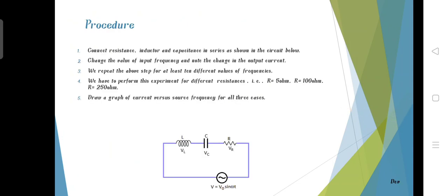The procedure of this experiment includes: Connect resistance, inductance and capacitances in series as shown in the circuit below. Change the value of input frequency and note the change in output current. Repeat the above step at least for 10 values of frequencies. Perform this experiment for different resistances: R equals 5 ohm, R equals 100 ohm, R equals 250 ohm. Draw the graph of current versus source frequency for all the 3 cases.